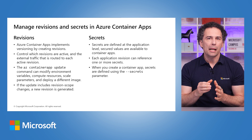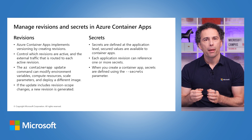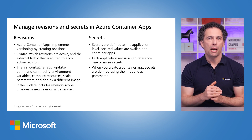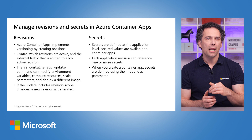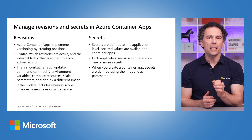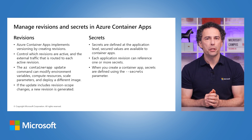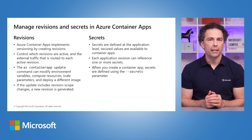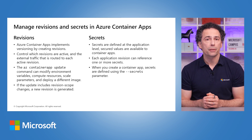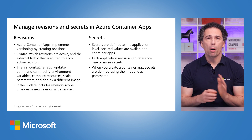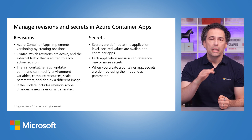Azure Container Apps enables your application to keep confidential configuration values in a secure way. When secrets are set at the application level, container apps can access these protected values. Secrets have an application scope and they're not tied to any specific revision of that application. Secrets don't create new revisions when they are added, removed, or modified. Each revision of an application can use one or more of those secrets, and the same secrets can be used by multiple revisions. When you create a container app, secrets are defined using the secrets parameter.